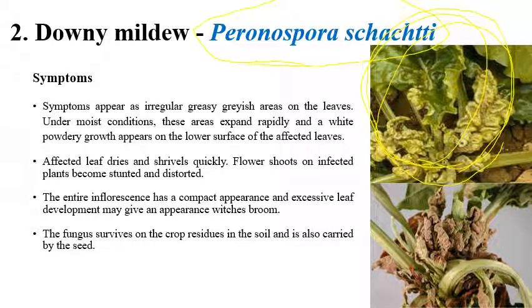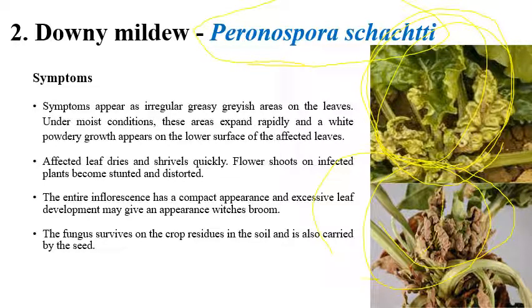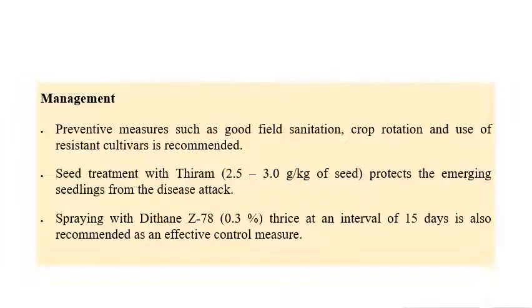The shrinking or shriveling of leaves can be clearly observed. In later stages, the entire inflorescence becomes compacted and shriveled, looking like witch's broom symptoms. Shrinking of leaves and white color powdery growth on the lower surface are the key symptoms. The fungus mainly survives on crop residue, so crop rotation is important. The disease is also seed-borne.